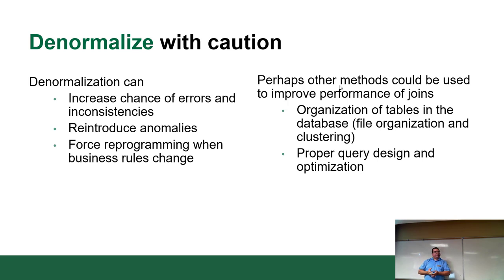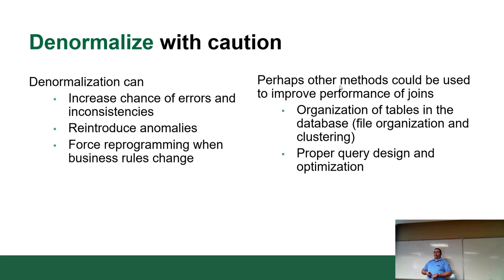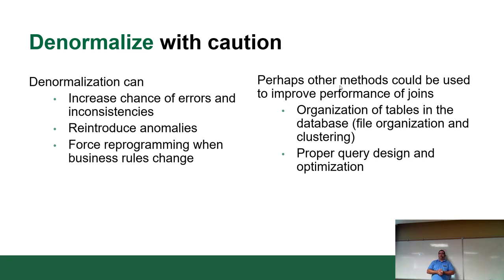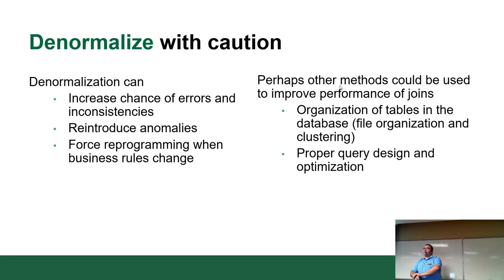Sometimes there are ways to avoid denormalizing. Advanced techniques like table spaces allow you to tell the database server which hard drive to put each table on, so you can search across multiple drives in parallel — like sorting cards with four people is faster than one. Also, writing good queries can improve join performance; joining every table even though you only need two, or using subqueries instead of joins, will hurt your performance.